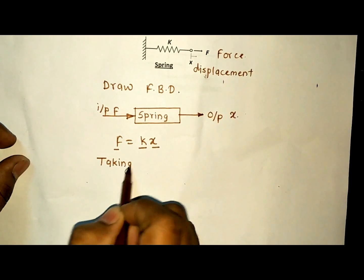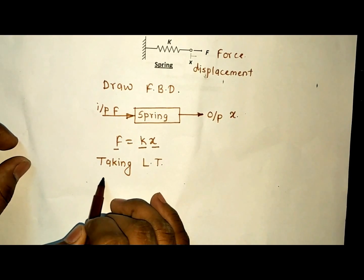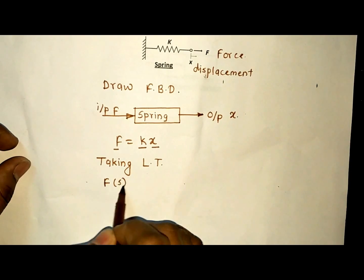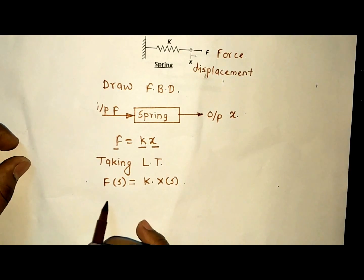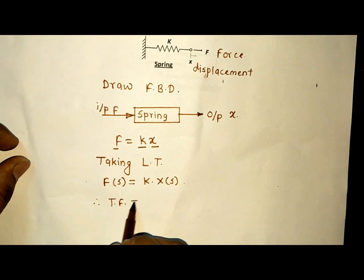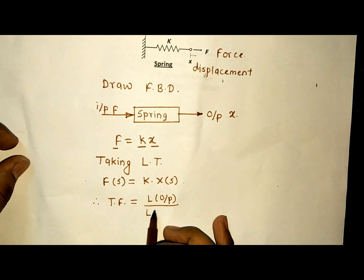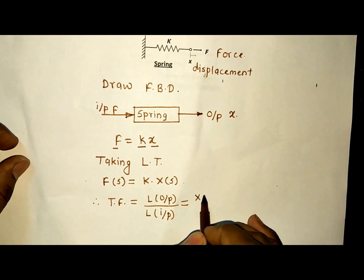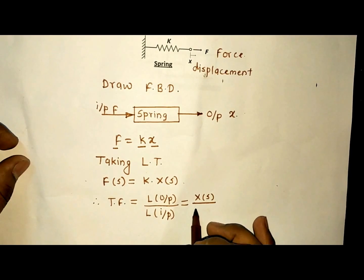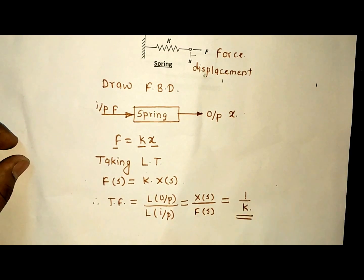Take the Laplace transform of this equation. F(S) is equal to K — a constant — times X(S). The transfer function is equal to the Laplace of the output X(S) divided by the Laplace of the input force F(S). So the transfer function X(S)/F(S) is equal to 1/K. This is the mathematical modeling of the spring.